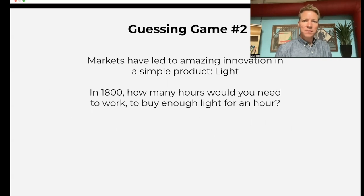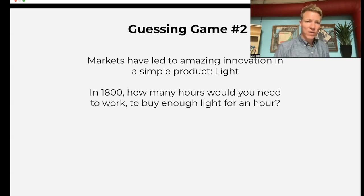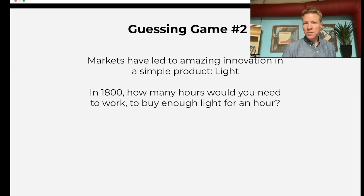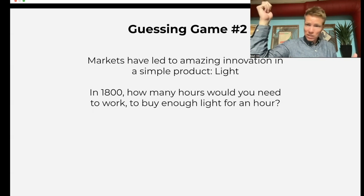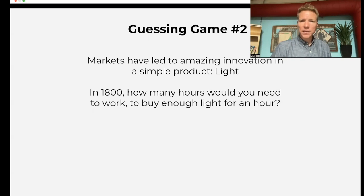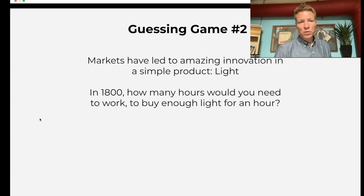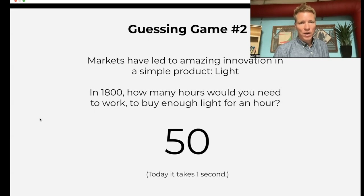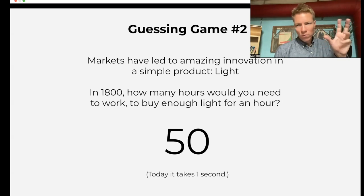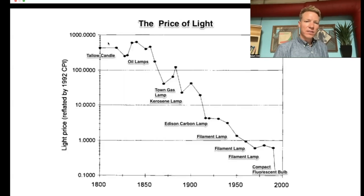Guessing game number two — to show how far innovation has taken us: in 1800, how many hours would you need to work to buy enough light for one hour? In 1800 you had candles and the like. The answer is 50 hours. Today it takes one second with average wages. And here you can see the price of light going down over time.